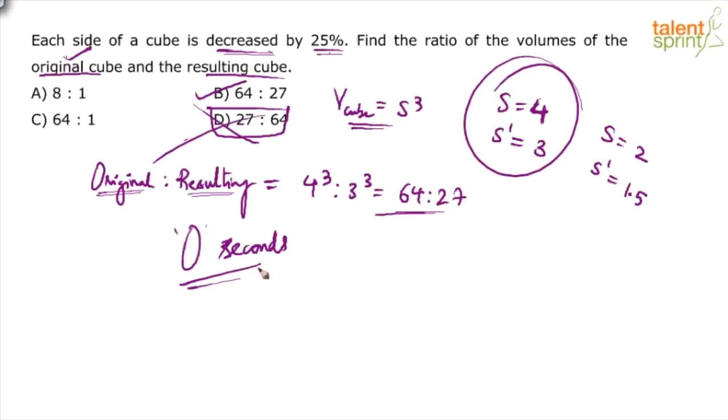So choose the values intelligently, smartly. Remember, this question should not take more than—0 seconds is an exaggeration—but it should not take more than 5 seconds in my view. You read the question and you know the answer is 64 to 27. You can take any value you want, you can take 2.5 and whatever resulting value, but it will only make it complicated.